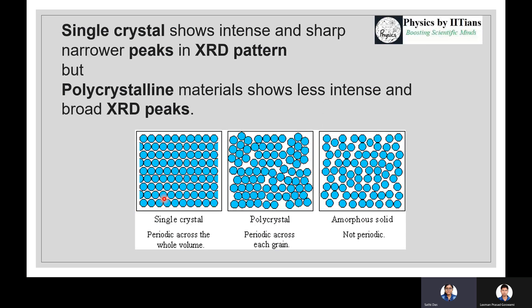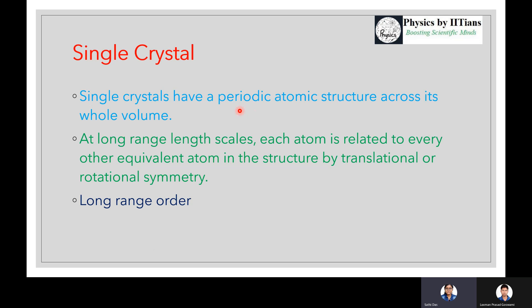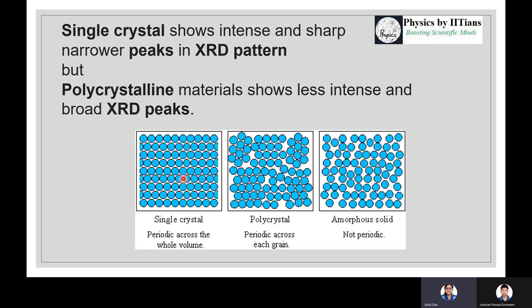First of all, you should know what is a single crystal and what is a polycrystalline material. The single crystal has a periodic atomic structure across its whole volume at long range length scales. It has long range order, and at the long range length scale, each atom is related to every other equivalent atom in the structure by translation or rotational symmetry. This is a single crystal picture - the crystal holds rotational and translational symmetries. Whether you are here or here or here, you get the same pattern repeated itself. This is periodic across the whole volume with long range order.